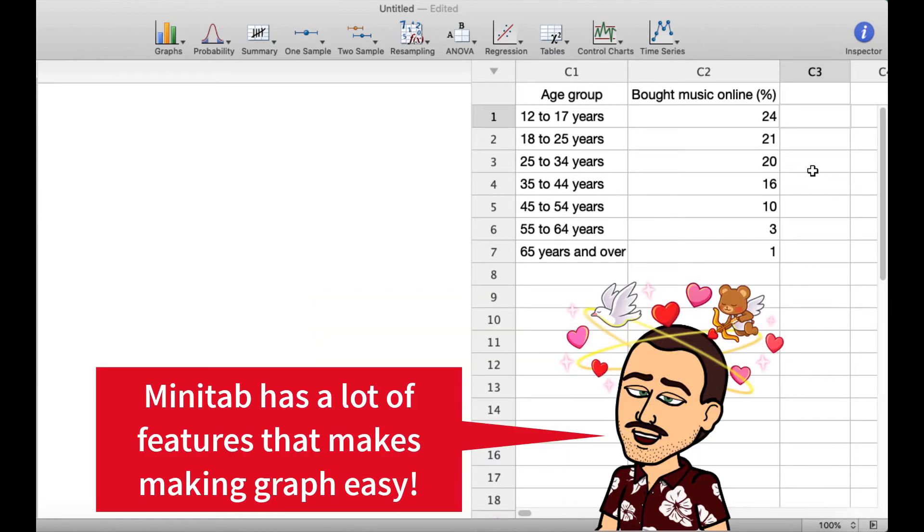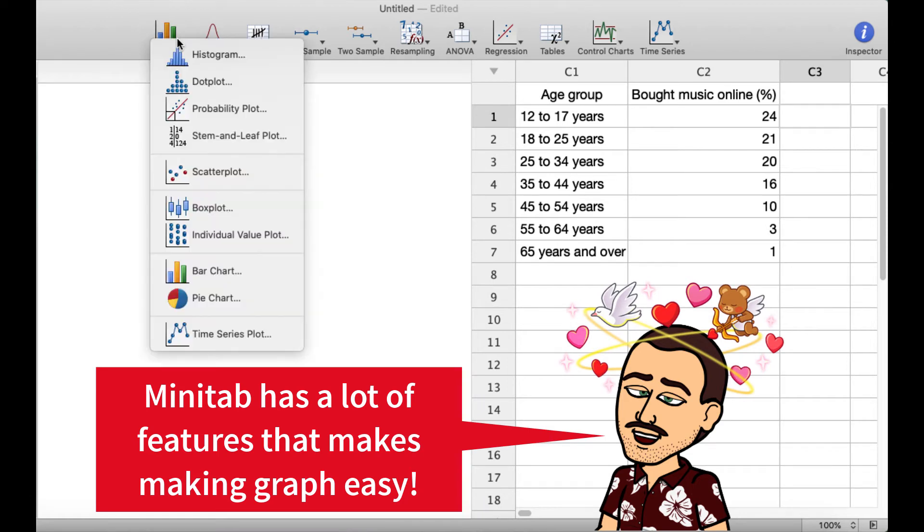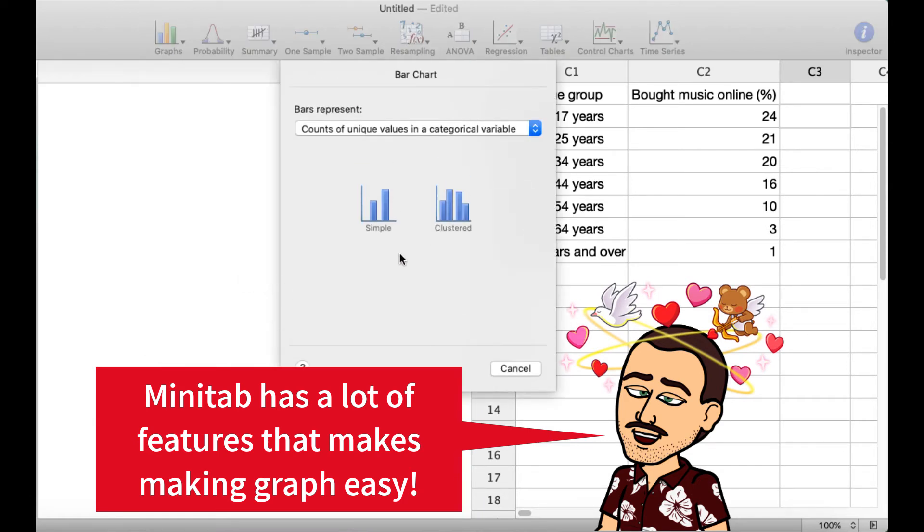And so now if we want to plot this with a bar graph, what we do is we go over here to graphs, we get bar chart, and we're going to use the summarized values for each category in a table. And we'll do simple.